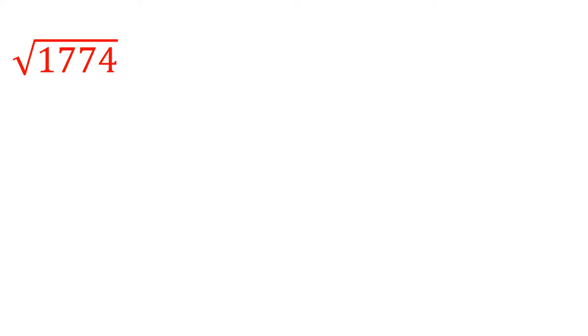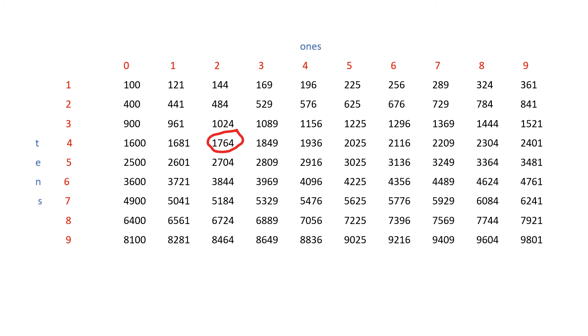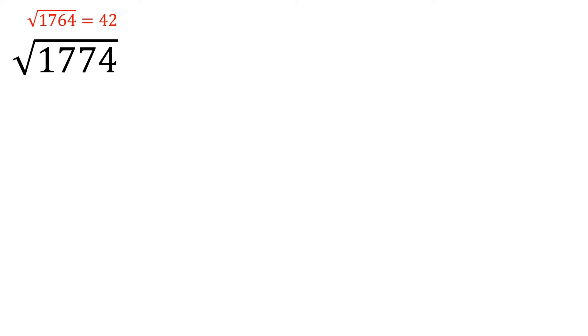We need to determine the largest perfect square less than this number. The largest perfect square less than 1774 is 1764. The square root of 1764 is equal to 42. We will have 42 in our solution.